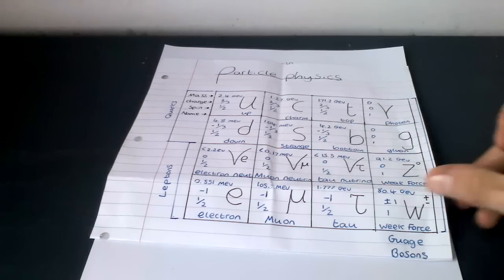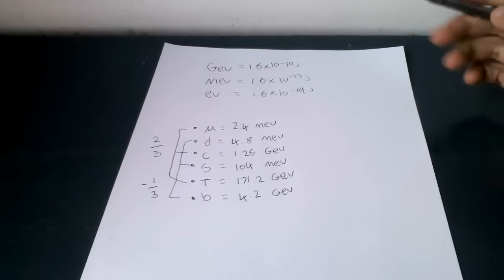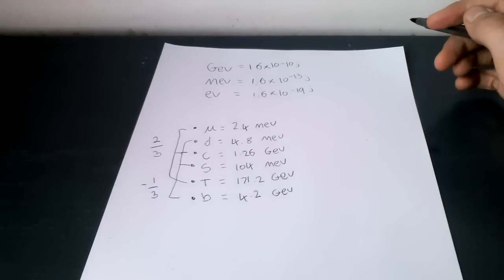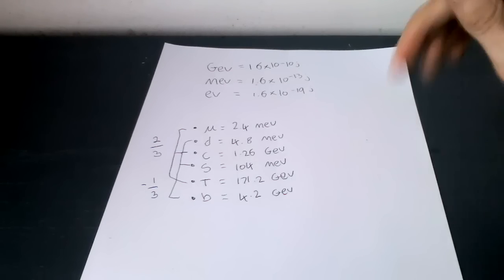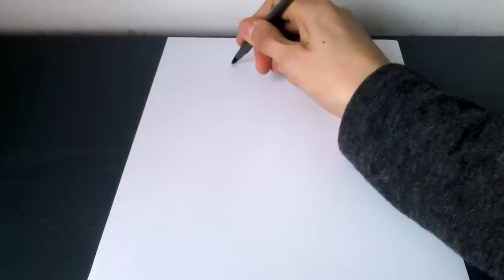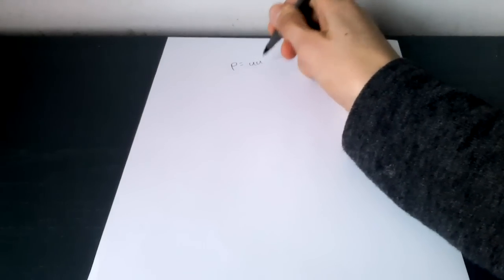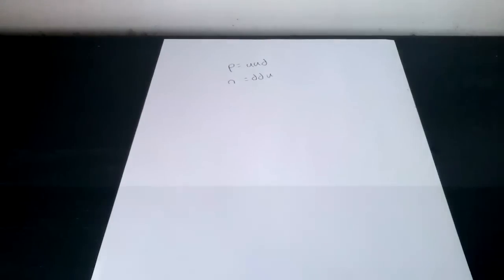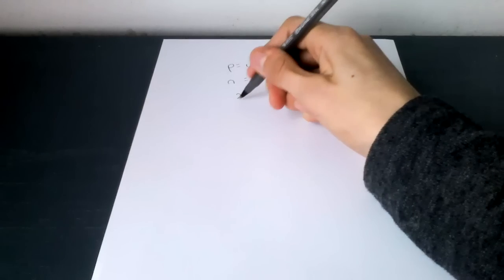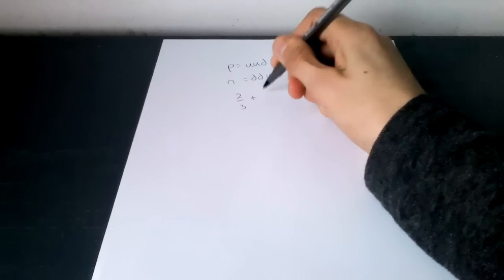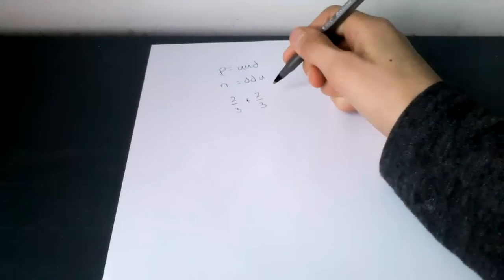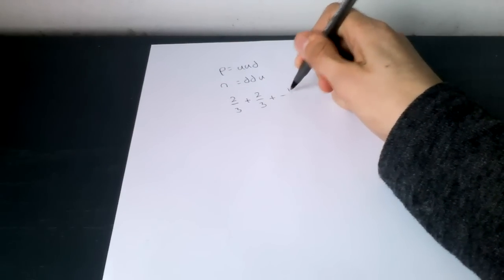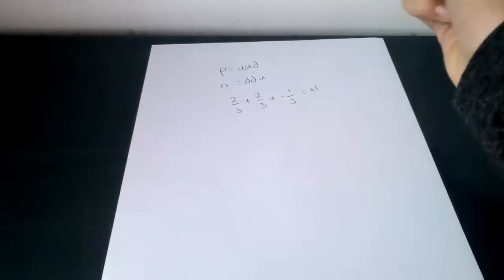So what gives protons their charge? A neutron doesn't have a charge. Why is that? It's to do with the quarks. A proton consists of 2 ups and 1 down quark. A neutron consists of 2 downs and 1 up quark. The charge of an up quark is 2/3, so there's two ups, you do 2/3 plus 2/3. One down quark is minus 1/3. If you add those together, it equals plus 1. That's the charge of a proton.